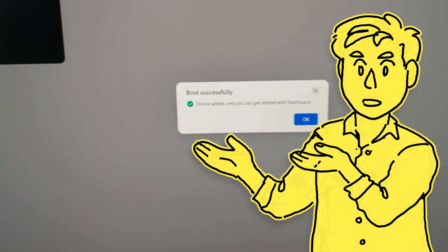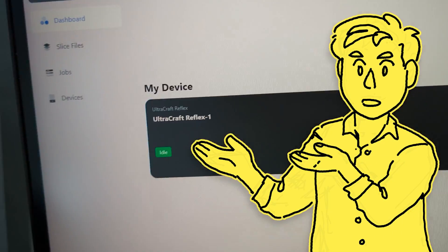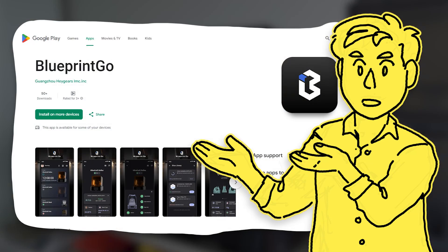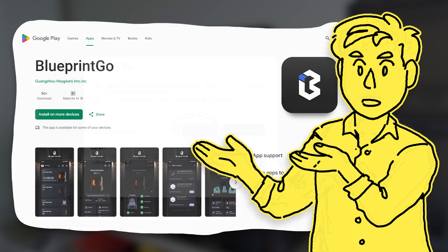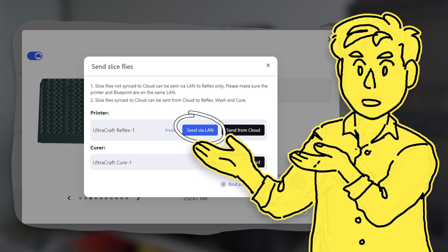After that I downloaded their slicer called Blueprint Studio and then synced the printer to my account. I also downloaded the app on my phone for testing called Blueprint Go. The app as well as using any of the cloud services is completely optional, you can instead just send via LAN or use a USB drive if you prefer, but it's nice to have options.